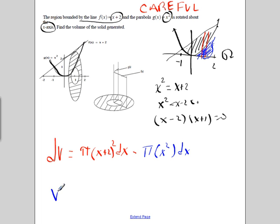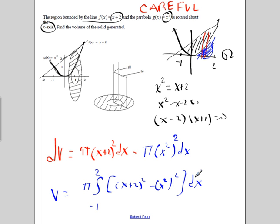Our total volume is the integral from negative 1 to 2 of pi times (x plus 2) squared minus (x squared) squared dx. The critical thing — and people often make mistakes here — is that it's the top squared minus the bottom squared. It is NOT (top minus bottom) quantity squared. That's order of operations.